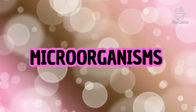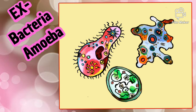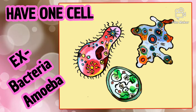There are many small organisms that are made up of only one cell. They are known as microorganisms. Some examples of microorganisms are bacteria, amoeba, and protozoa.